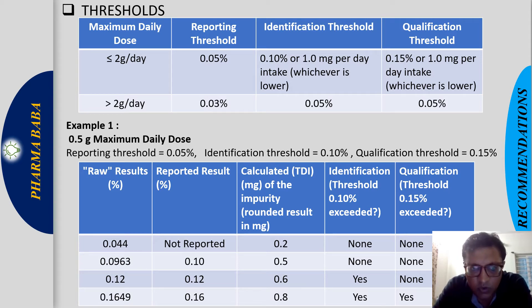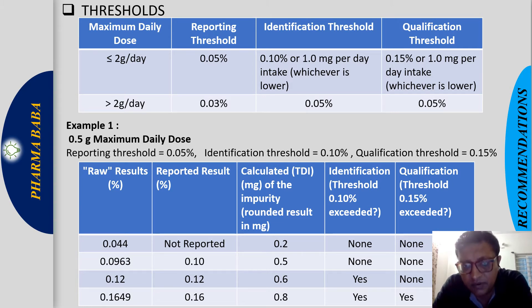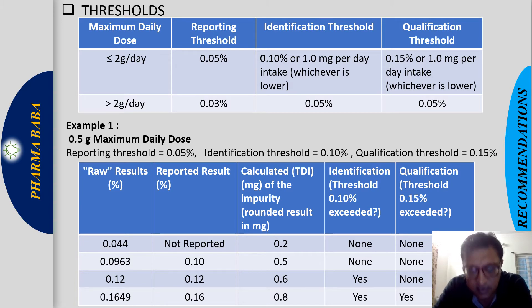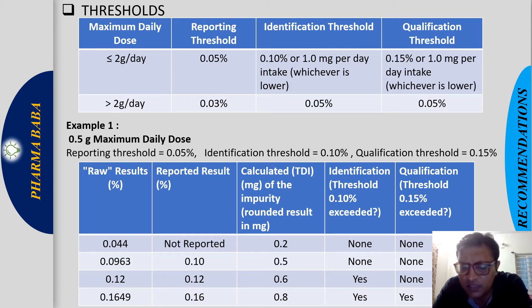Above 0.05%, you must report the impurity; below 0.05%, no need to report. The identification threshold is 0.10% or 1 mg per day intake. If the maximum daily dose is less than 2 grams per day and the reported impurity is more than 0.10%, the structure needs to be identified. If it is less than 0.10%, no need to identify the structure.